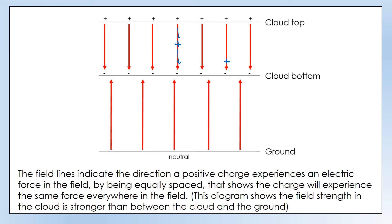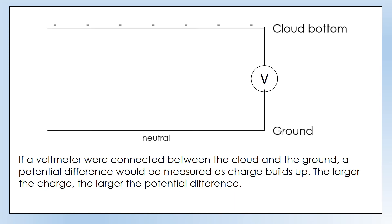Let's move on and look at what happens to cause a lightning strike. We're now going to change from looking at it in terms of an electric field to thinking about it in terms of a circuit. If we connected a voltmeter between the cloud bottom and the ground — obviously we can't literally do that — we'd be measuring a potential difference, because we've bunched up a lot of negative charges and created a region of high electric potential energy. The ground doesn't have any of that, so there is a potential difference between the ground and the cloud.